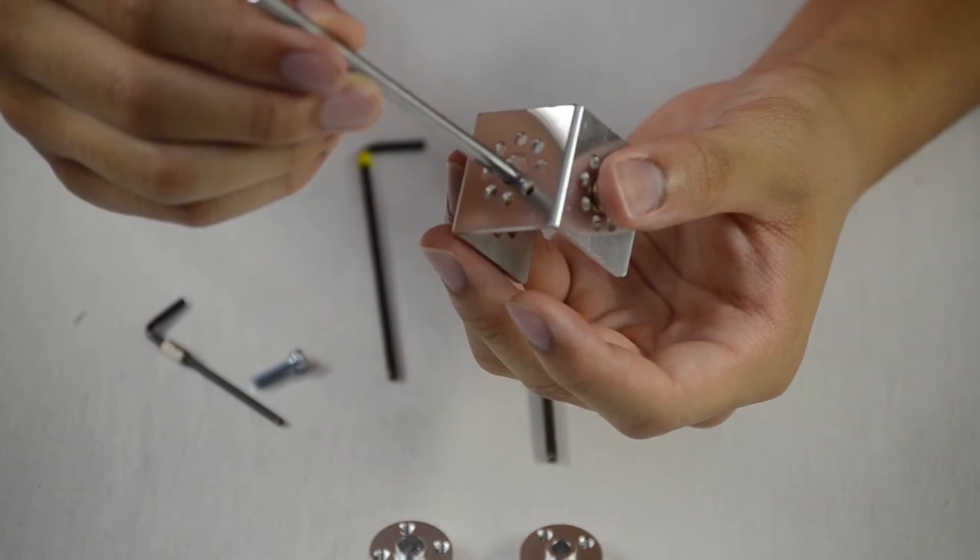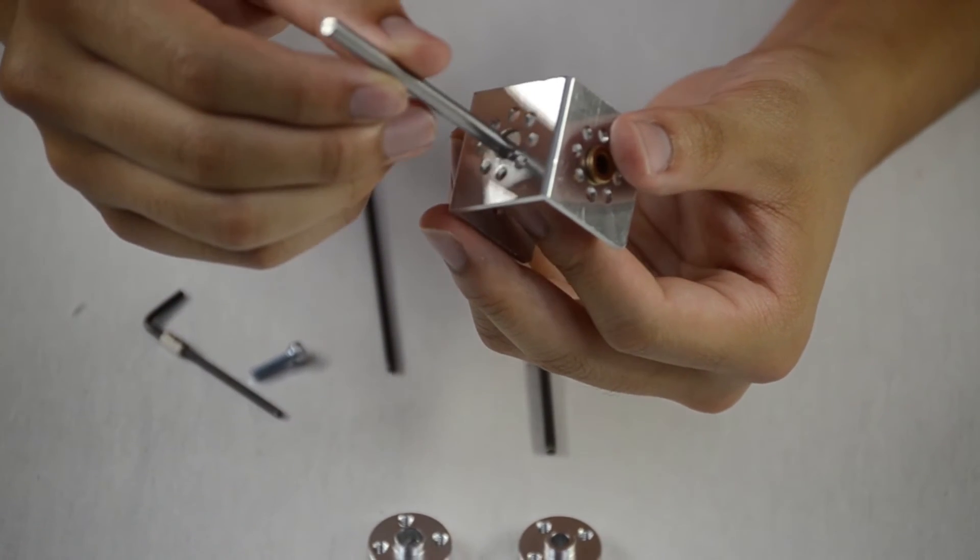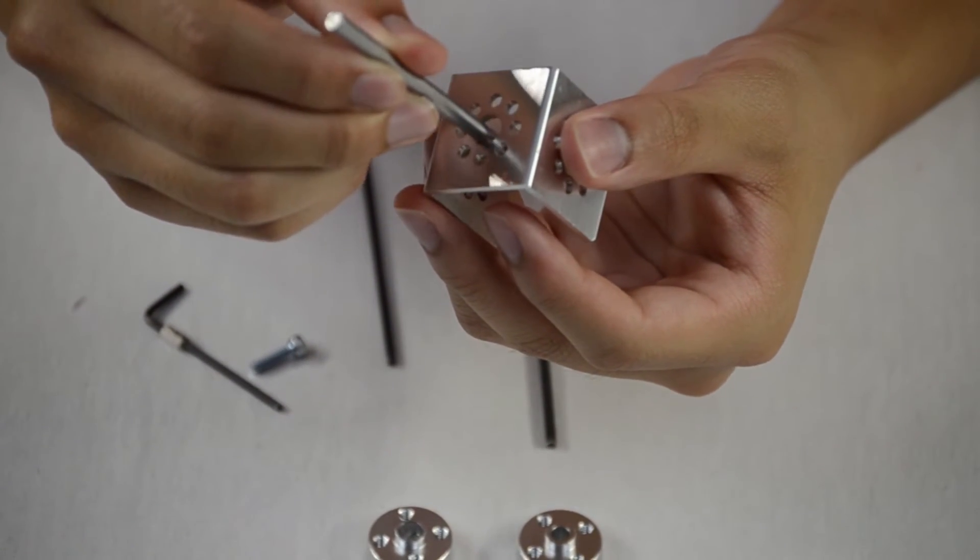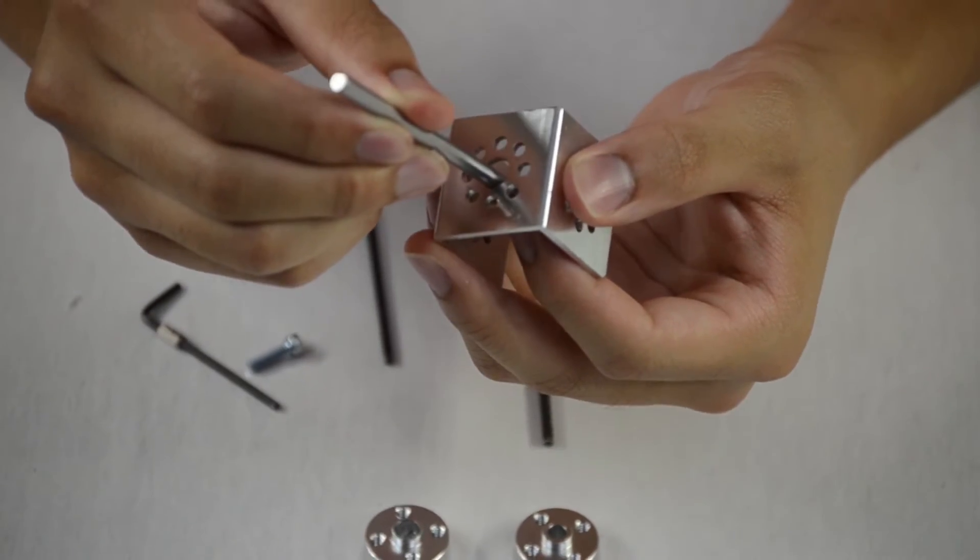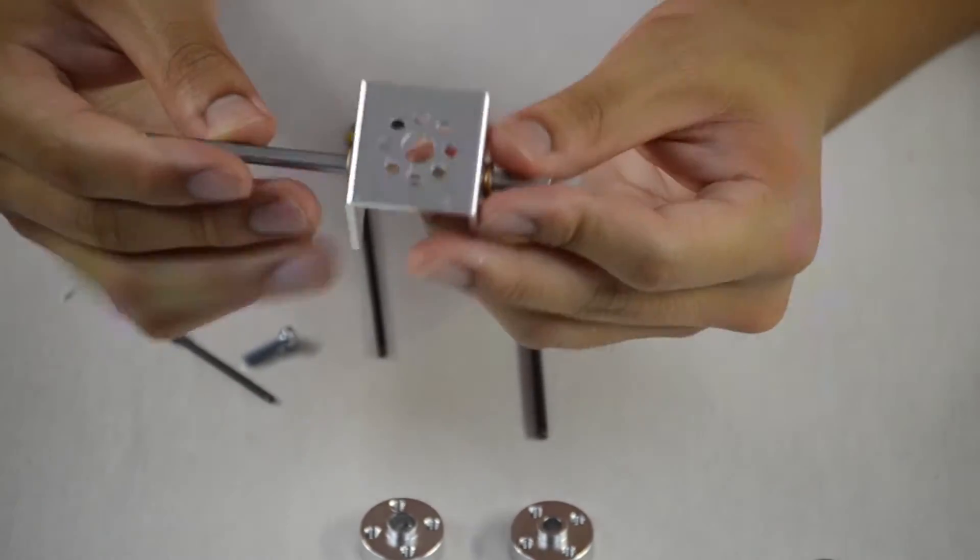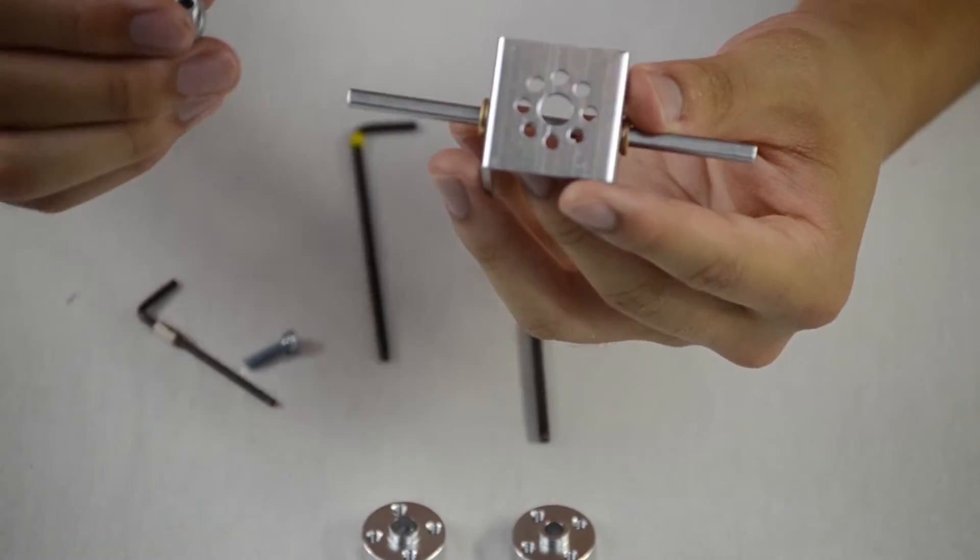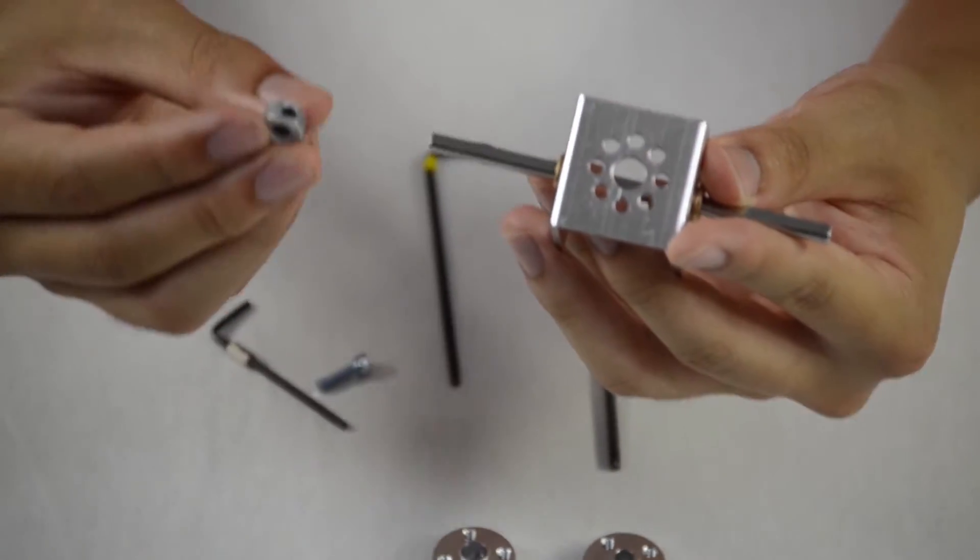And to stop it from moving back and forth, use this axle collar, which is the much smaller one. You slide it on and then you use your white hex key, which is your smallest hex key. Just turn the set screw until it can't turn anymore.